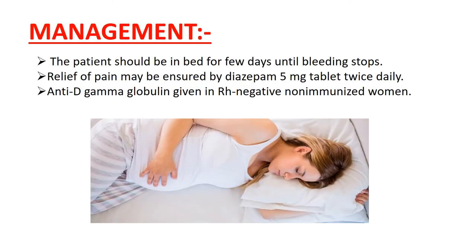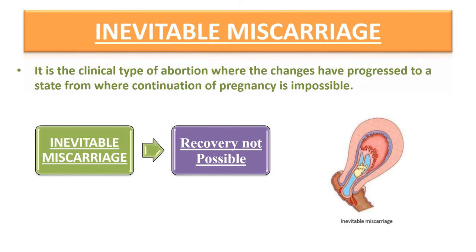Management: The patient should be on bed rest for a few days until bleeding stops. Prolonged restriction of activities has no therapeutic value. Relief of pain may be ensured by tablet Diazepam 5mg twice daily. Inevitable miscarriage is a clinical type where the process has progressed to a state from which continuation of pregnancy is impossible — meaning recovery is not possible.